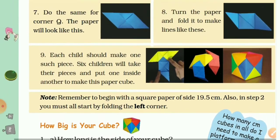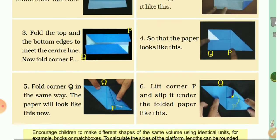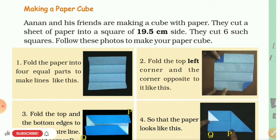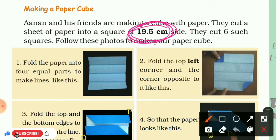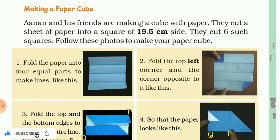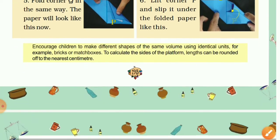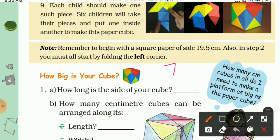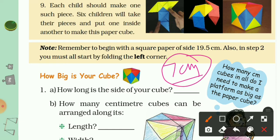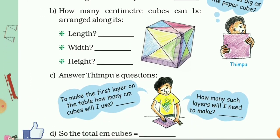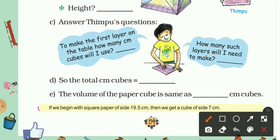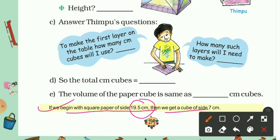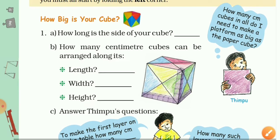Before the first topic, let's go to the previous page on 'Making a Paper Cube.' The instructions say that using a square sheet of 19.5 cm on each side, we have to make a cube. We will find that each side of the resulting cube is 7 cm. So if we begin with a square paper of side 19.5 cm, we get a cube of 7 cm.